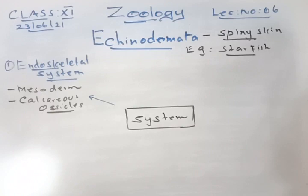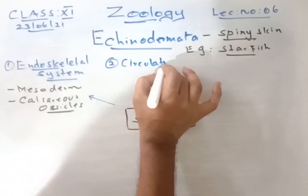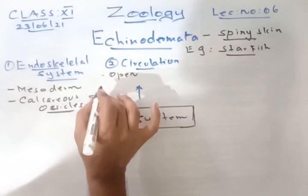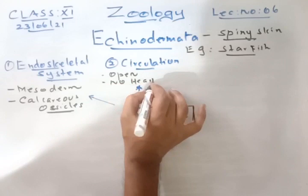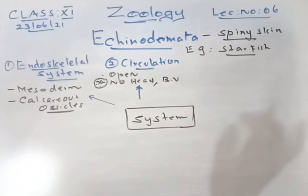Third system: excretory system — it is absent in Echinodermata, so no need to worry about it. Fourth system: digestive system — digestion is complete. The mouth is present on the ventral (lower) side and the anus is present on the dorsal (upper) side.